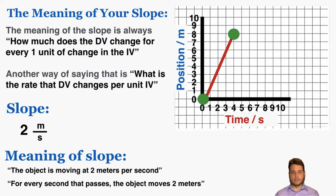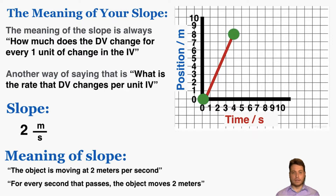Here's another example. This is a position-time graph where position is measured in meters and time is measured in seconds, which means the slope is meters per second. The slope here is two meters per second, which means the object is moving two meters for every one second that passes. That's the physical real-world meaning of the slope of this lab report graph.